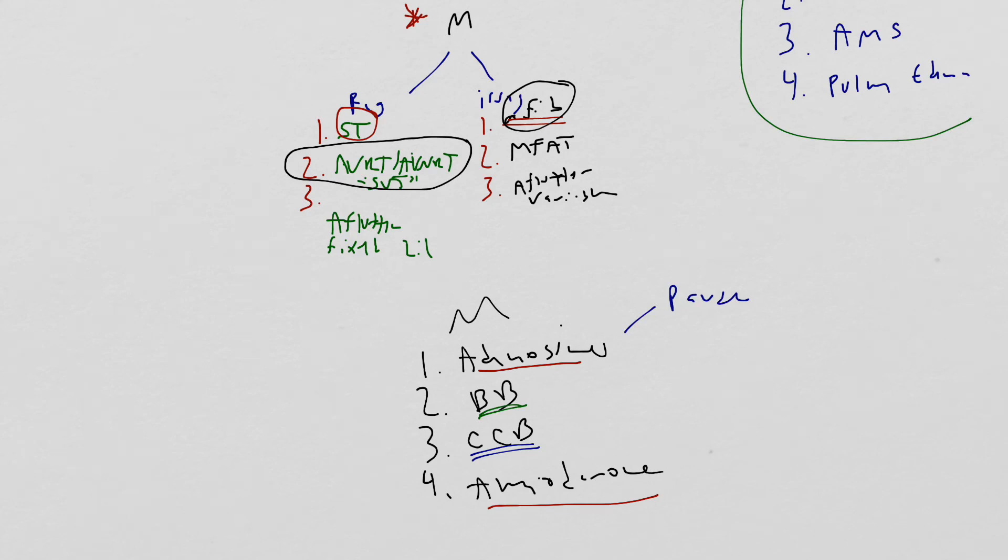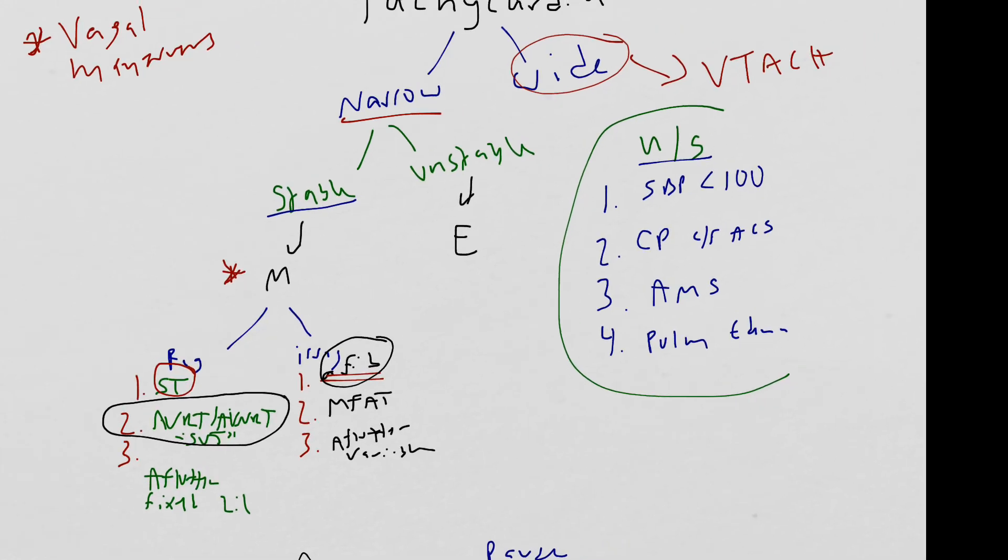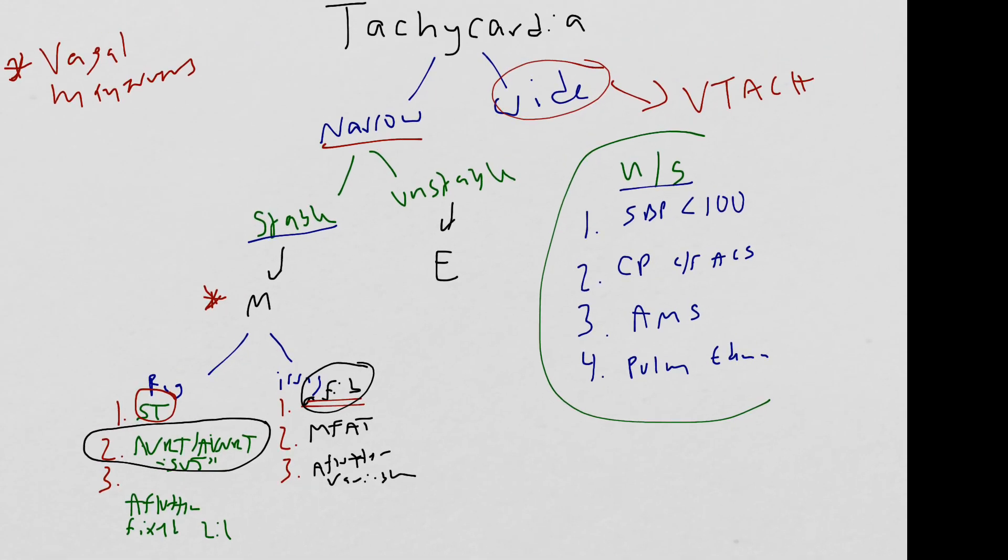Now that we've gone through the stable portion of the algorithm, we quickly need to go and understand the unstable portion of the algorithm. Patients that are unstable and have a narrow complex tachycardia get electricity in the form of a synchronized shock starting at 100 joules. Here we are assuming the patient has a pulse, because if they were pulseless, we would be in the ACLS pulseless algorithm. We also need to remember that all patients with a pulse get synchronized shocks to avoid the R on T phenomenon.